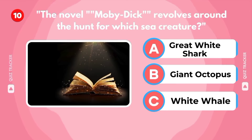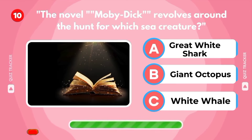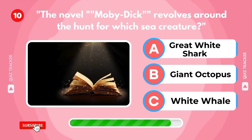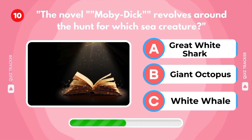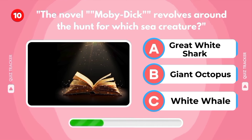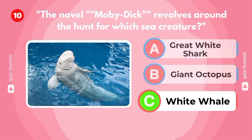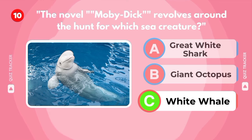The novel Moby Dick revolves around the hunt for which sea creature? Great white shark, giant octopus, white whale. It's white whale. If you got 10 out of 10, you are a literary buff.